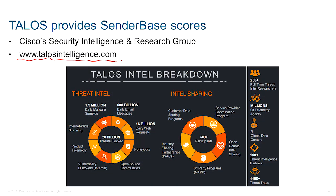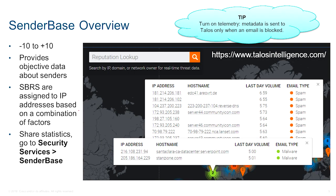Talos checks about 600 billion emails a day. As we mentioned in the first recording, about 85% of those are spam. They also analyze malware samples and declare what is malware or not. All that information that Talos is gathering — we want our ESA to start tapping into that information, and the main thing the ESA will be using is what we call the sender-based reputation score.